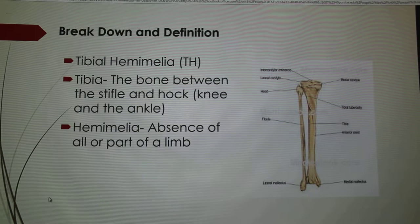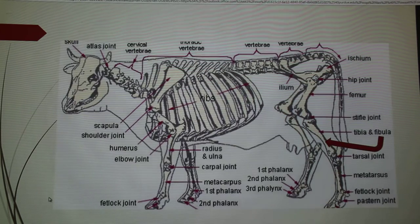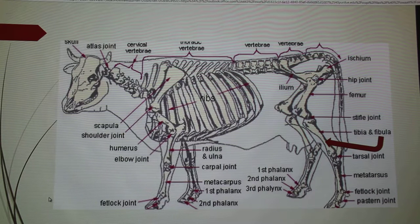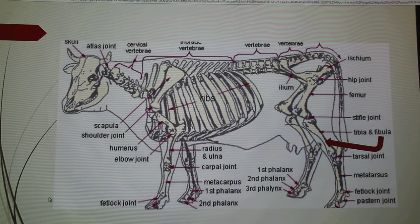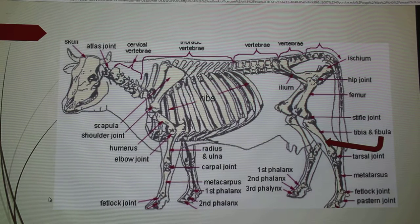Abdominal. Okay, so this is just a skeleton of your typical beef cow, and you can see just kind of the location of it and what's missing.